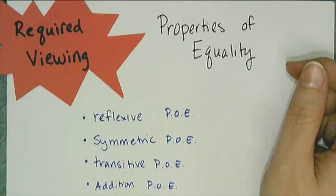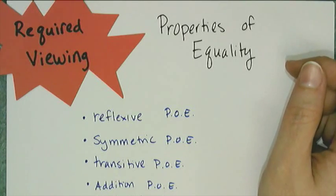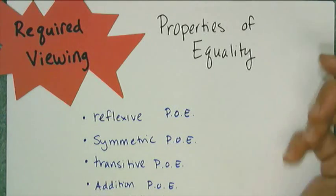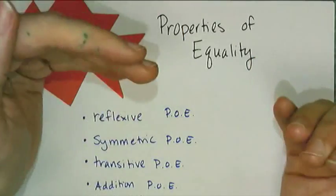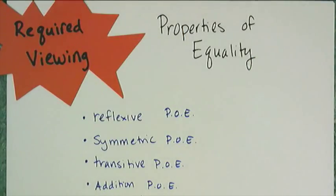There are things that you can do to equations, there are ways equations relate to each other, that maintain the truth value of the equal. Because when you're given an equation, you're told that two expressions are equal, and you've got to maintain the equal throughout the entire process.